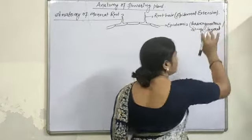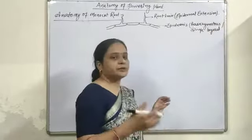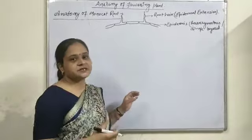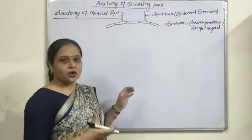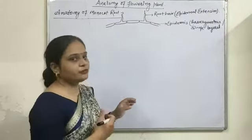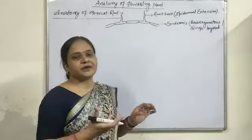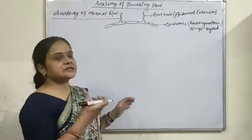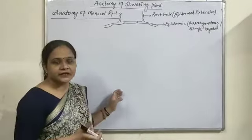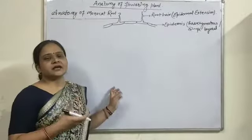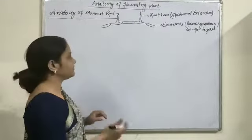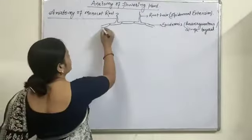This epidermis consists of elongations, or extensions, called root hairs. These root hairs are epidermal extensions. Below the epidermis, there is present a cortex tissue which is also made up of parenchymatous cells loosely arranged, and they have intercellular spaces between them.